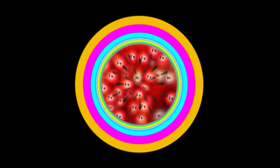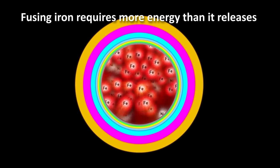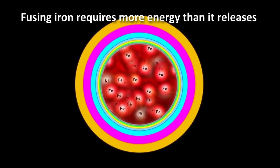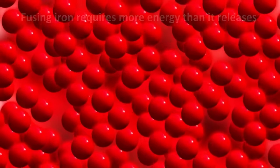Up to this point, the fusion reaction put out energy, allowing the star to fight gravity. But fusing iron takes more energy than it produces. So the star eventually loses the battle against gravity.